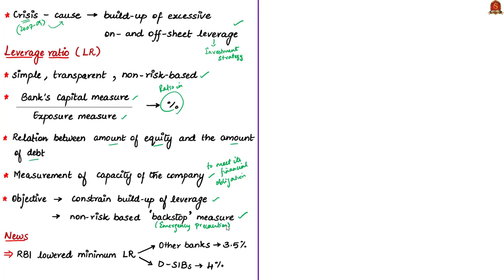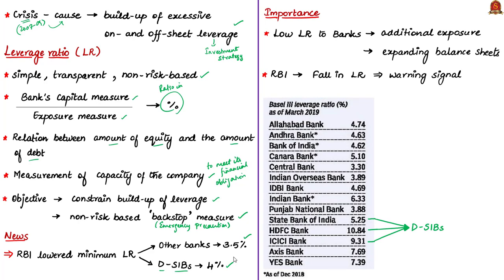Today's news tells that RBI has lowered the minimum leverage ratio from 4.5%. In its second bimonthly policy review, RBI has mandated a leverage ratio of 3.5% for all banks except Domestic Systemically Important Banks (DSIBs), which will have a 4% ratio. The lower leverage ratio allows some freedom for banks to take additional exposure with respect to capital and expand their balance sheets.